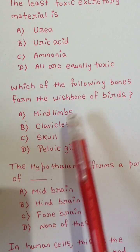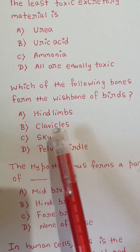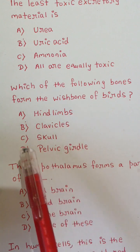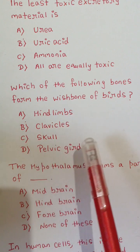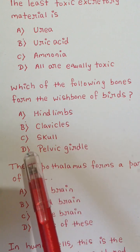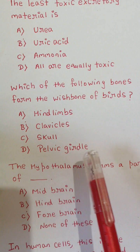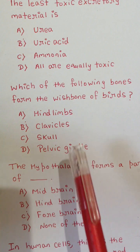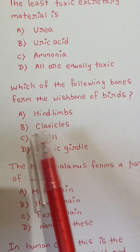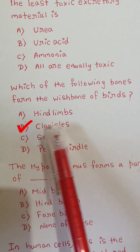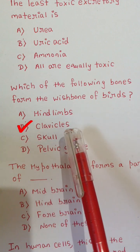Which of the following bones form the wishbone of birds? A) Hind limbs, B) Clavicles, C) Skull, or D) Pelvic girdles. The correct option is B: Clavicles.